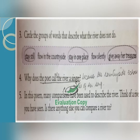Circle the groups of words that describe what the river does not do. You have to circle the words which are not the activity of the river. Now, 'stay still' — the river does not stay still. We all know, you have read about the words nomad, tramp. The river is always traveling, always moving. So we will circle 'stay still.' Again, 'stay in one place' means all the same — the river never stays in one place, but it flows.